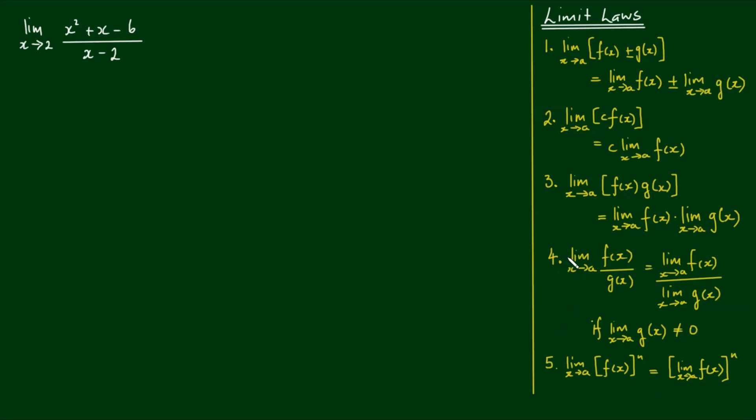However, we can't apply limit law number 4 straight away to evaluate this limit because as x approaches 2, the denominator approaches 0. 2 minus 2 is equal to 0 and anything divided by 0 is undefined. So we have a case of division by 0.